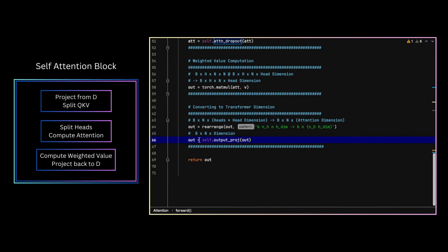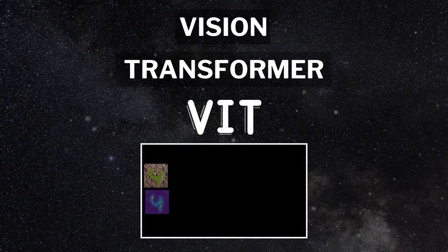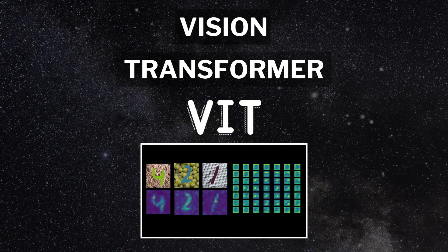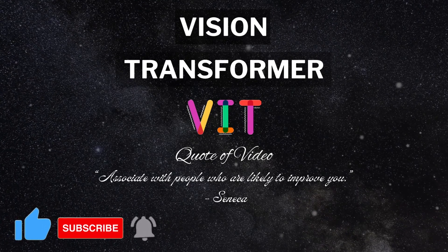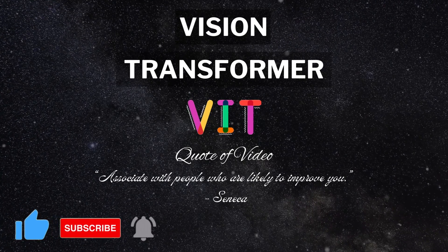Hopefully with this, everything going on in the attention block of VIT is more clear. If not, do let me know in the comments what's still unclear and I'll try to answer it there. In the next part, we'll build our entire Vision Transformer, then see what our model is learning after training it on our toy dataset. So see you there, and until then keep liking the videos and subscribe to the channel if you haven't already.